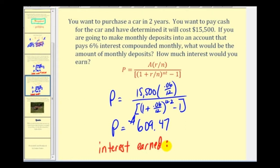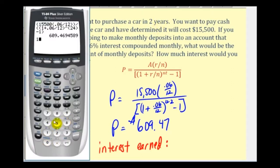Now let's determine how much interest would be earned over the two year period compared to the four year period. The ending account balance is still going to be $15,500, but our payments are only over two years. So we'll have the monthly savings amount times 12 payments per year times two years. Over the two year period, we only earned $872.72 in interest.